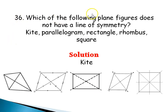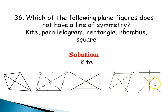Question 36: Which of the following plane figures does not have a line of symmetry — parallelogram, rectangle, rhombus, or square? A line of symmetry divides a shape into two equal parts. A rectangle, rhombus, and square all have lines of symmetry. But the kite does not have a line of symmetry, so kite is the answer.